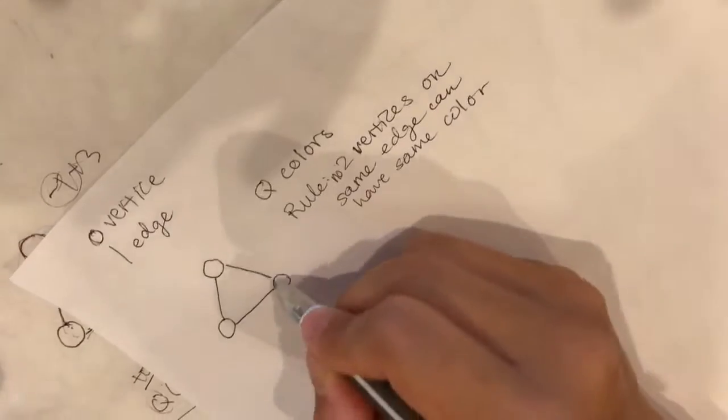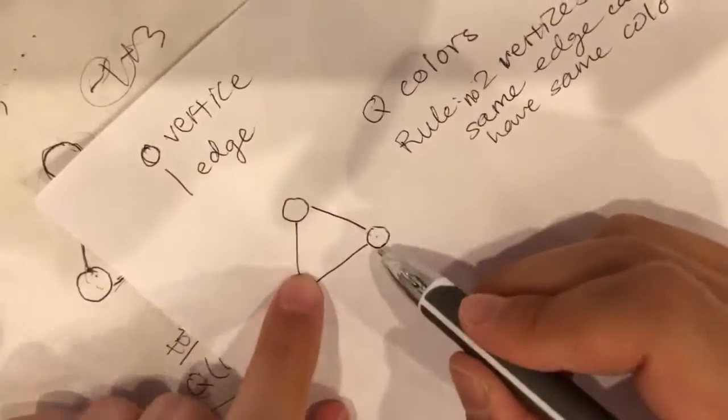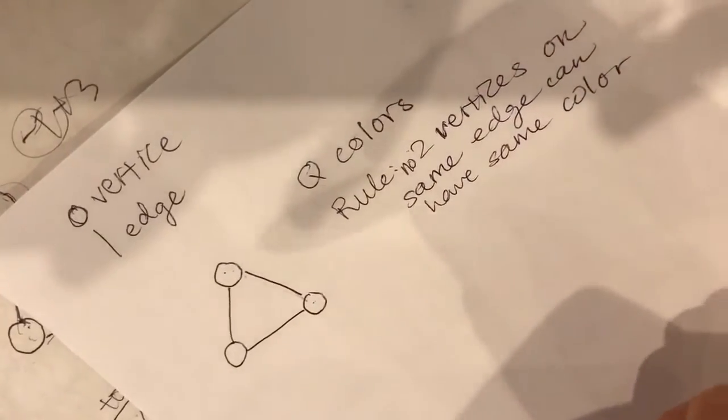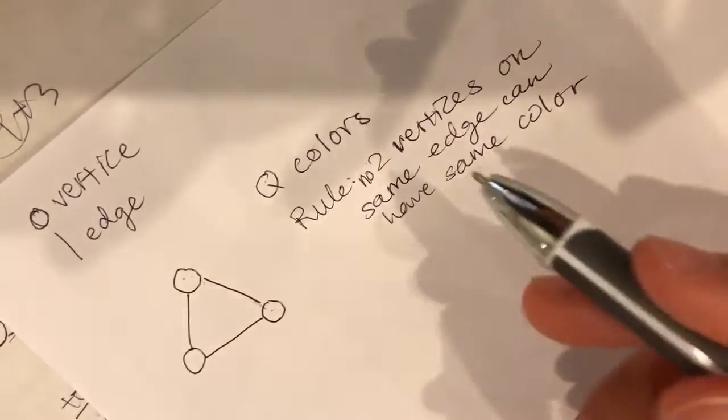Our rule is that no two vertices on the same edge can have the same color. So these two cannot have the same color, these two cannot, these two cannot. So for our triangle, all three vertices have different colors.